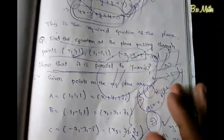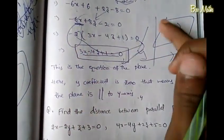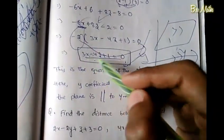Looking at the question again: find the equation of the plane and show that it is parallel to the y-axis. The plane equation 3x - 4z + 1 = 0 has no y term. Since the y-coefficient is 0, meaning it is 0 times y, the plane is parallel to the y-axis.